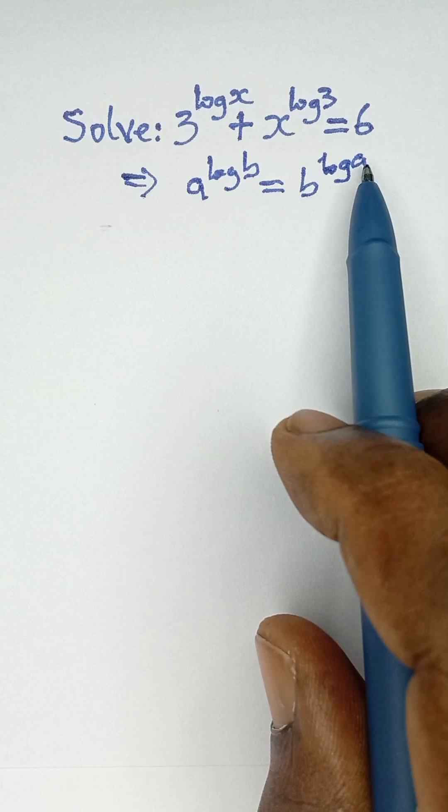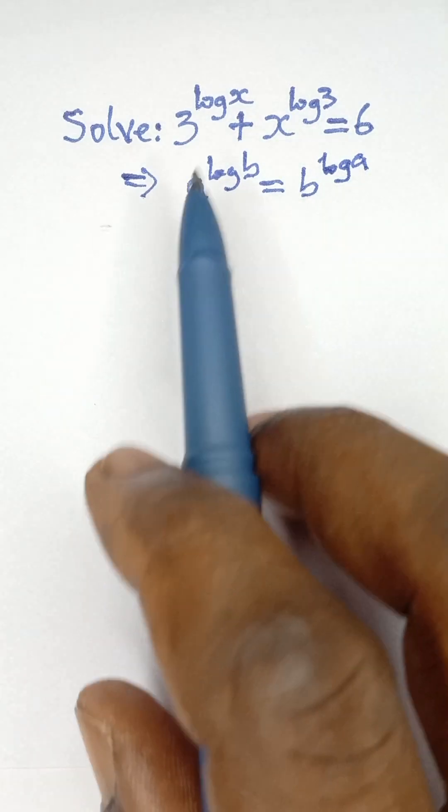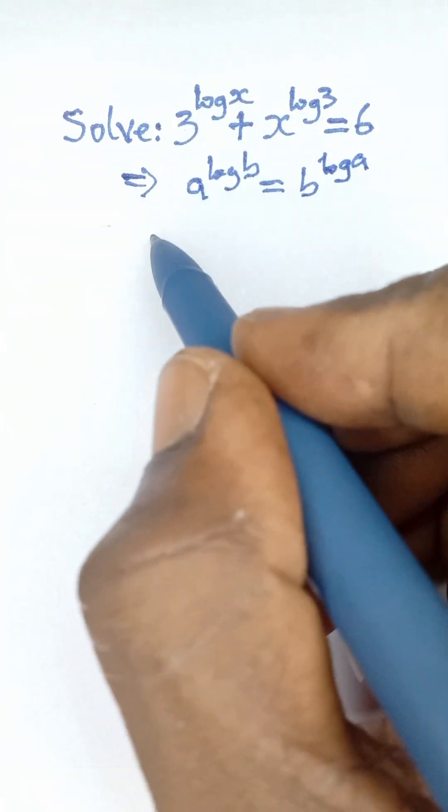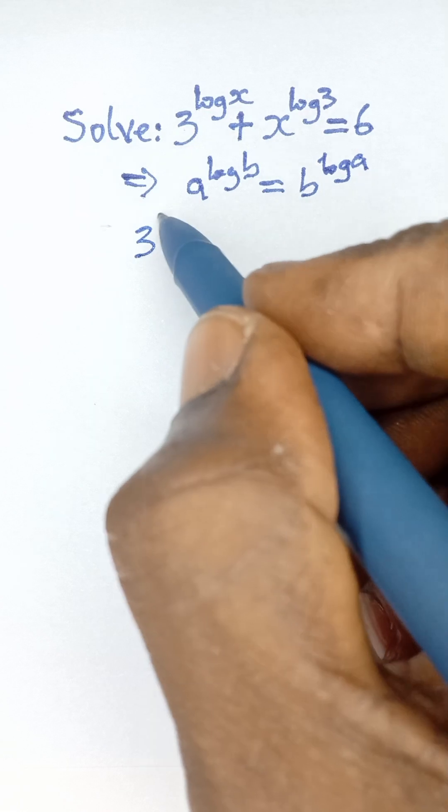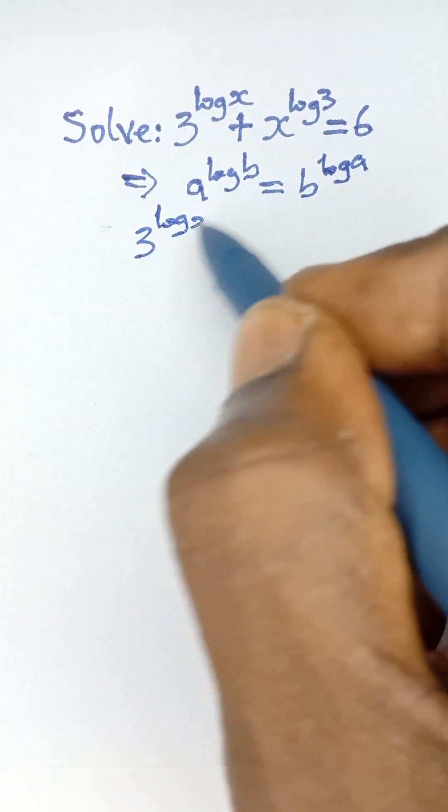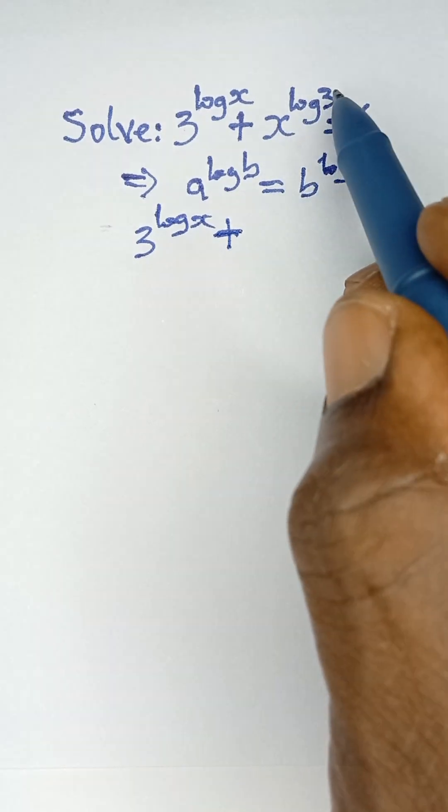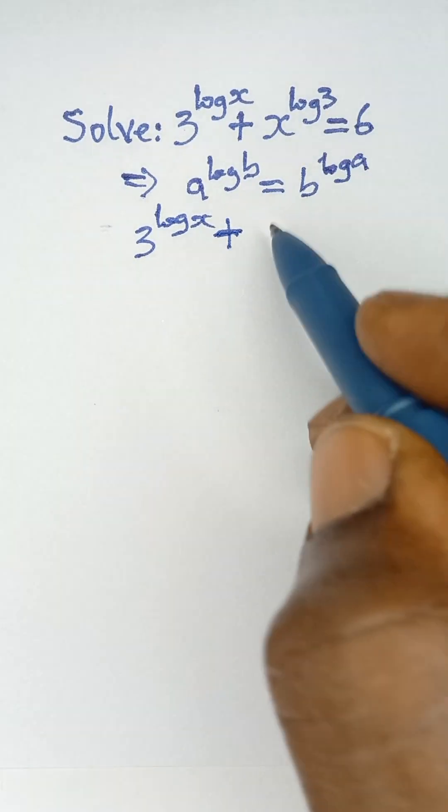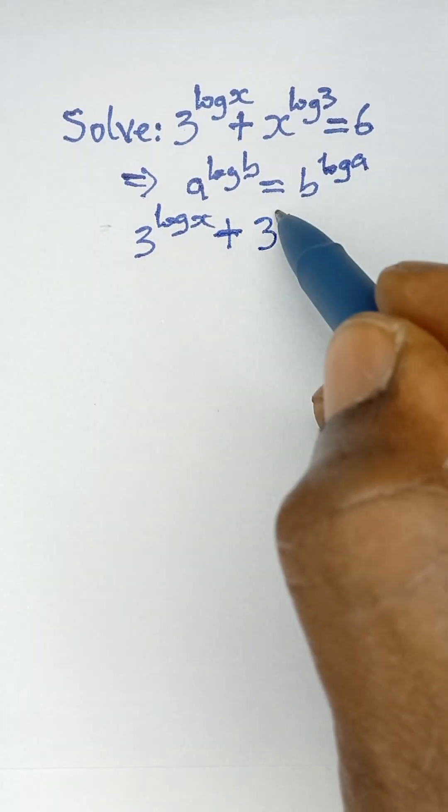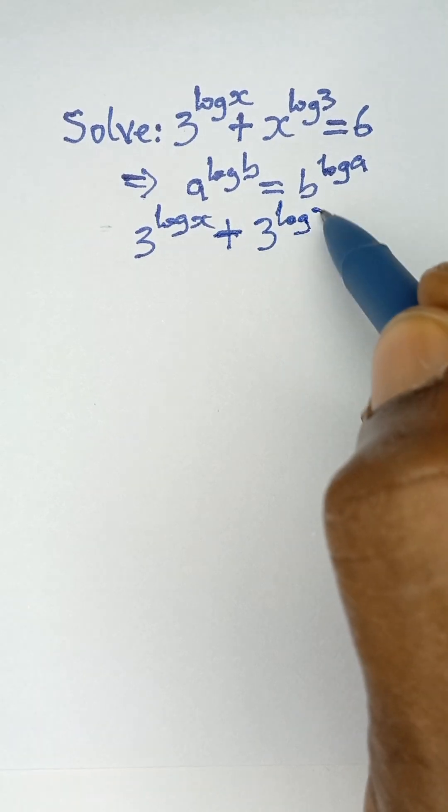With this principle, we are going to write 3 raised to the power log x plus x to the power log 3 as 3 raised to the power log x plus 3 raised to the power log x, which equals 6.